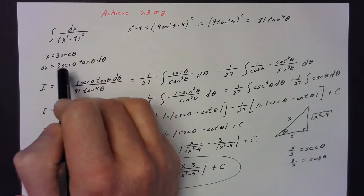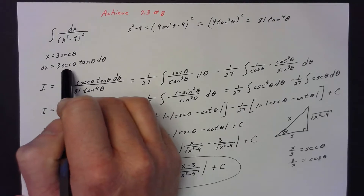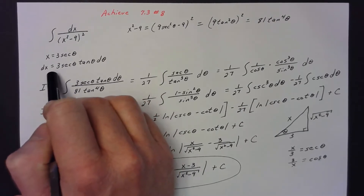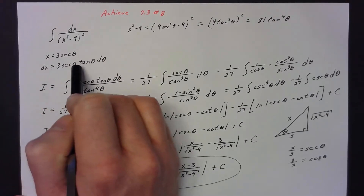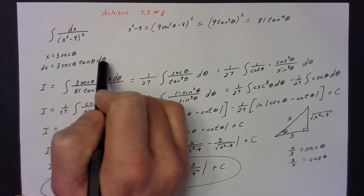Now I need to find out what dx is. The derivative of secant is secant tangent, so dx is 3 secant θ tangent θ dθ.